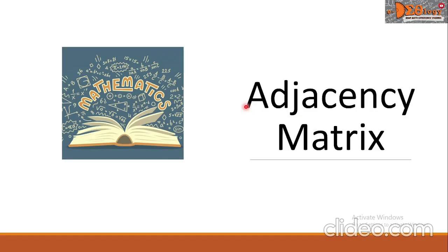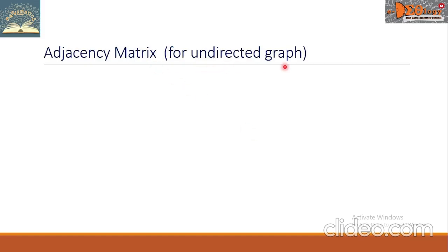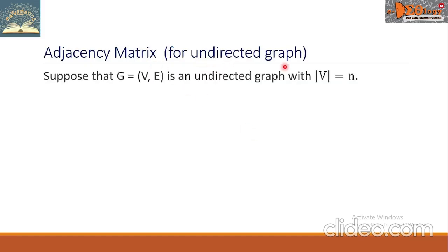Hi everyone! Today, we are going to study adjacency matrix. This is for undirected graph. Suppose that capital G equals, with elements capital V and capital E, is an undirected graph with cardinal number of capital V equals N.